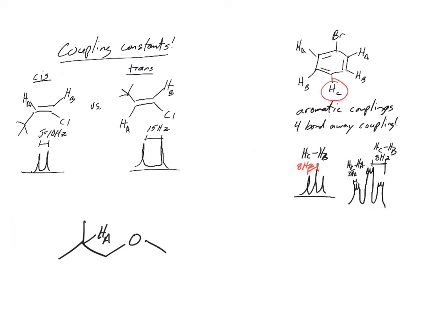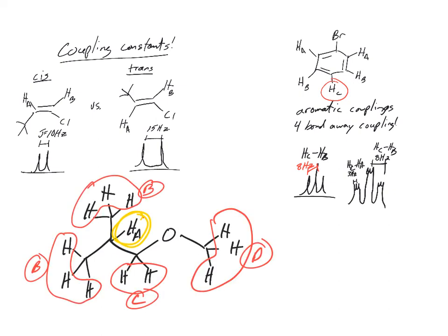Let's try another one. Let's pretend you're HA in this case. What kind of splitting will HA have? So first thing we want to do is draw in all the other hydrogens. So we filled in the other hydrogens in this molecule. We've labeled them: B, there's six Bs, there's two Cs and three Ds. We're just looking at A.